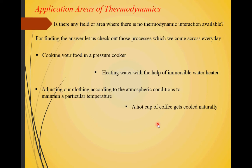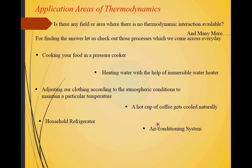A hot cup of coffee gets cooled naturally because it has more temperature than the surrounding, so it loses heat to the surroundings to reach an equilibrium condition — eventually reaching the same temperature as the environment. That also involves transfer of energy from one region to another, which is thermodynamics. A household refrigerator functions by removing heat from the substances kept inside and rejecting it to the surroundings. So energy is removed from the system — thermodynamics is involved there as well. An air conditioning system works on the same principle as a refrigerator, though the setup and area of application differ.